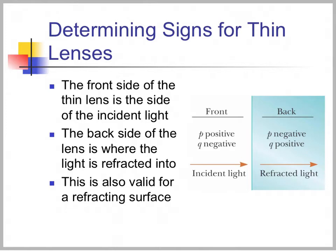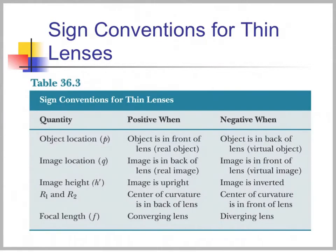To determine signs for thin lenses, the front side is the side of the incident light, and the back side is where the light is refracted into. P is positive in front of the lens, Q is negative if it's in front of the lens, P is negative if it's in back, and Q is positive if it's in back. R1 and R2 are positive if the center of curvature is in back of the lens, and negative if the center of curvature is in front. The focal length is positive for a converging lens and negative for a diverging lens.